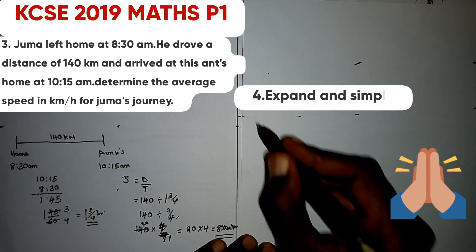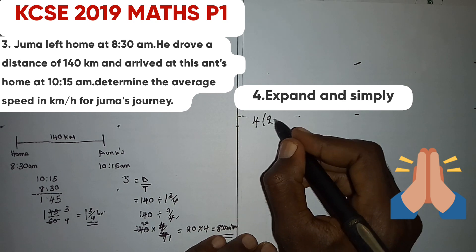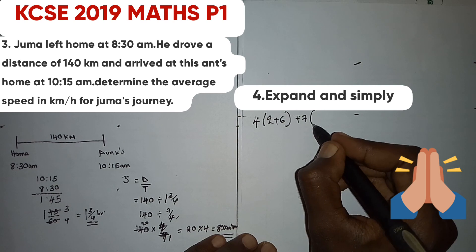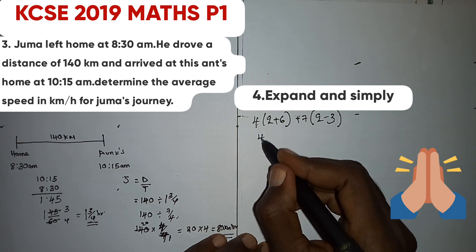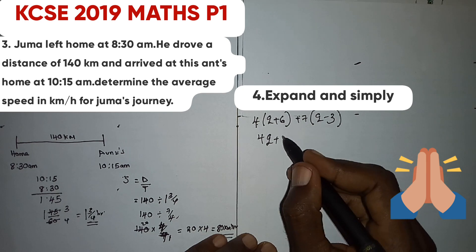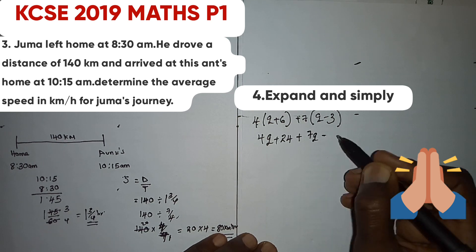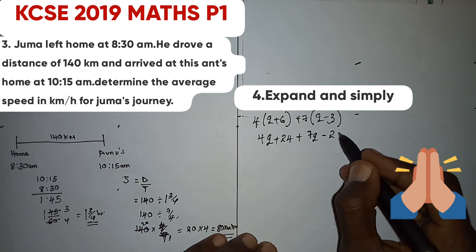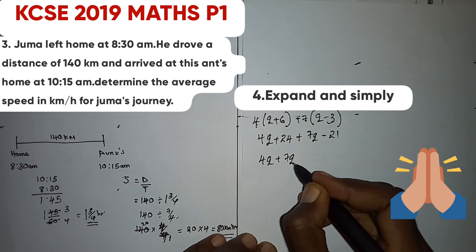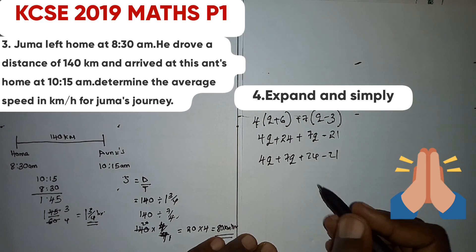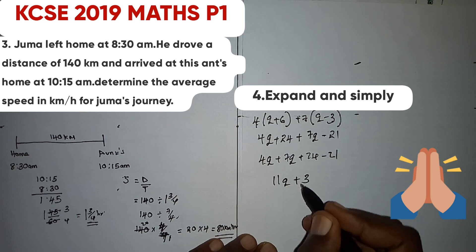Question 4 says: expand and simplify 4 into bracket (q plus 6) plus 7 into bracket (q minus 3). Expanding: 4 times q is 4q, plus 4 times 6 is 24, plus 7 times q is 7q, minus 7 times 3 is 21. Collecting like terms: 4q plus 7q is 11q, and 24 minus 21 is plus 3. Answer: 11q plus 3.